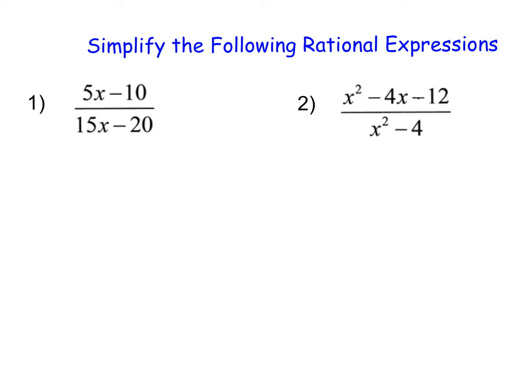Let's dive in and take a look at a couple of examples. In both examples, we currently don't have any multiplication going on. To use this trick, we need a times c over b times c, so we need multiplication taking place. In order to create multiplication out of a polynomial, we are going to need to use our knowledge of factoring.